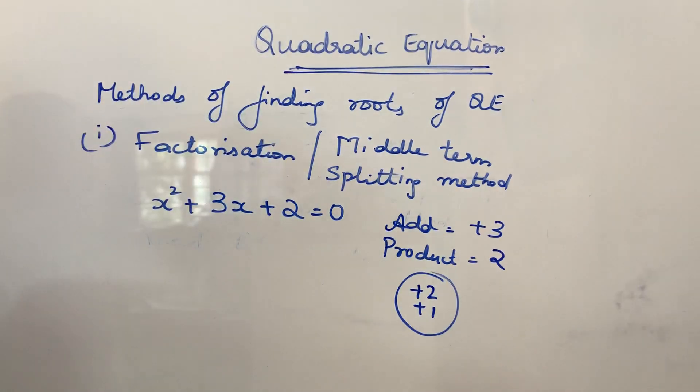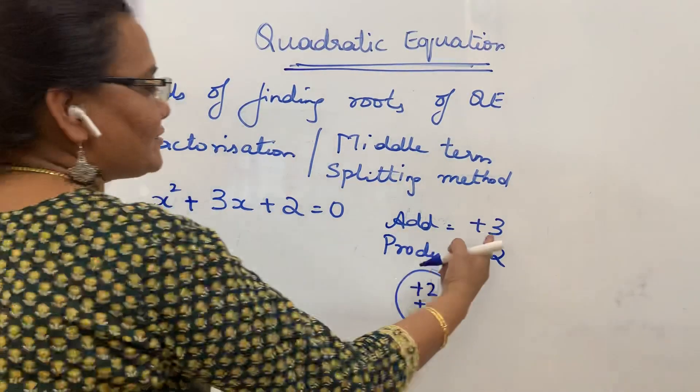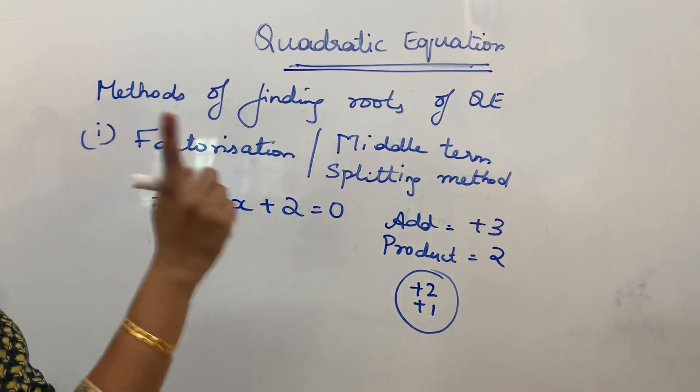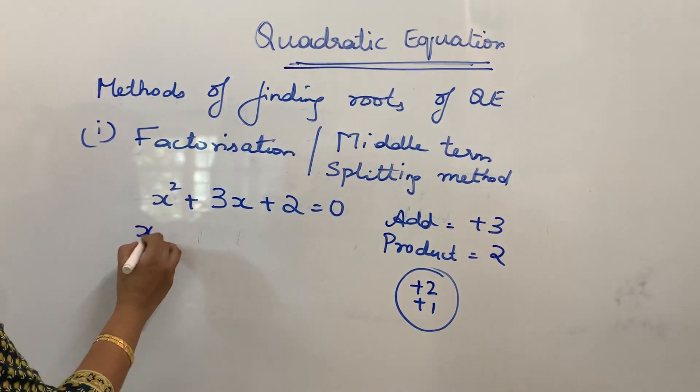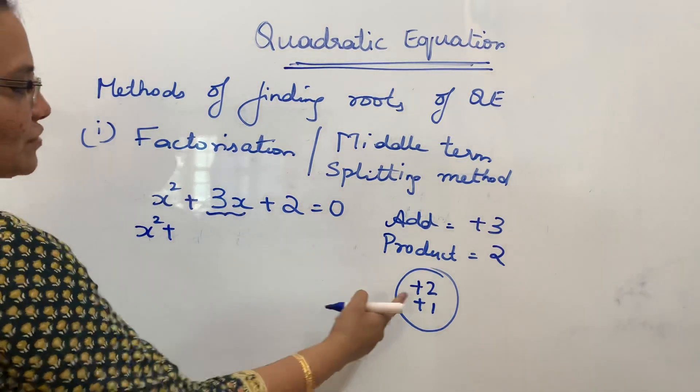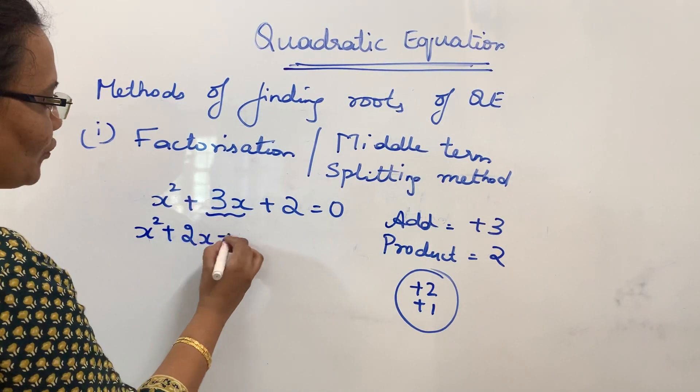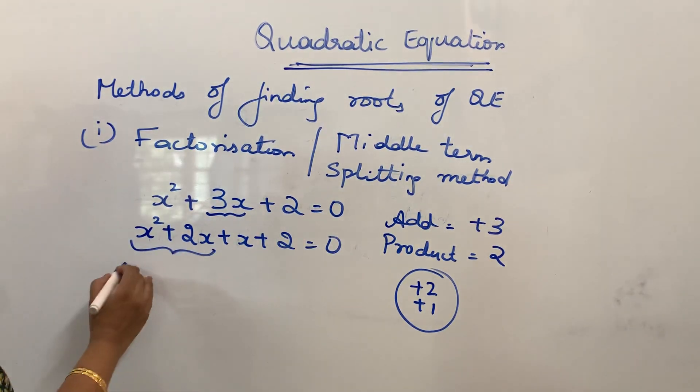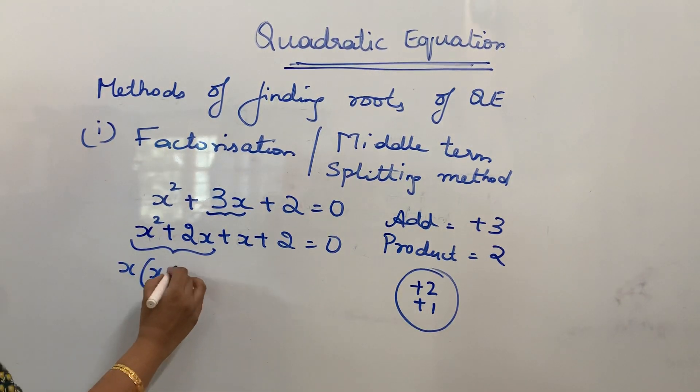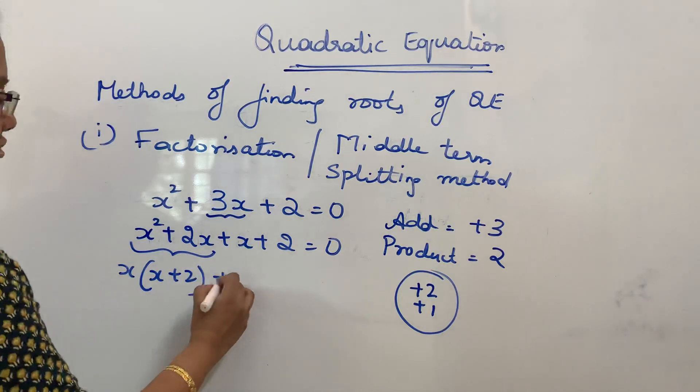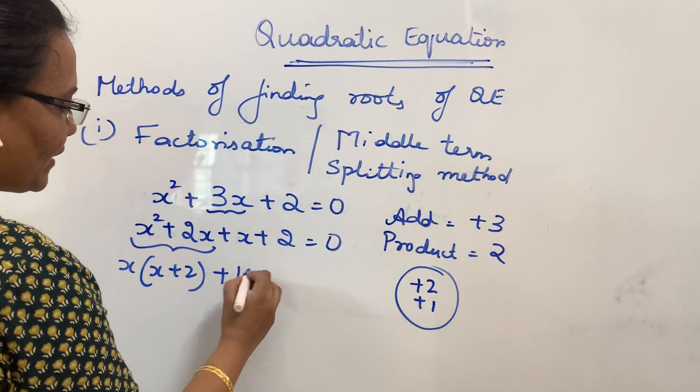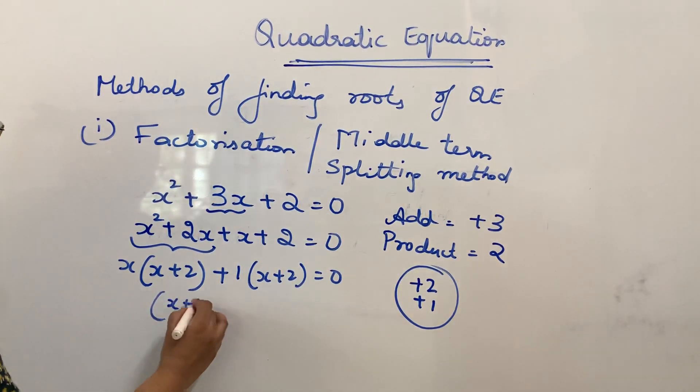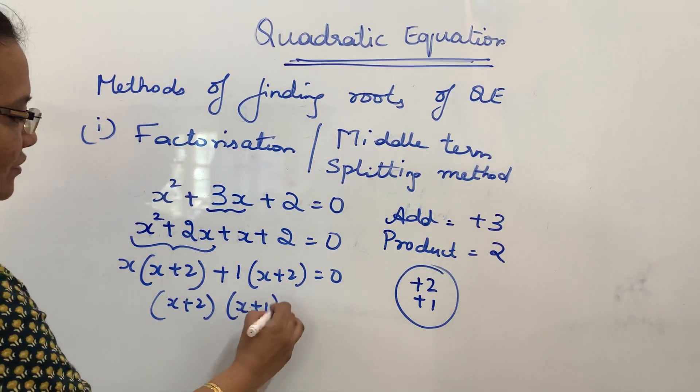If you take +2 and +1, if you add you will get +3 and the product is +2. You should be careful with the sign. So X² + in place of 3X, you are going to write it as 2X + X + 2 = 0. Now between first and second term, take X as common. So you will get X(X + 2). Between third and fourth term, take 1 as common, (X + 2). So (X + 2)(X + 1) = 0.